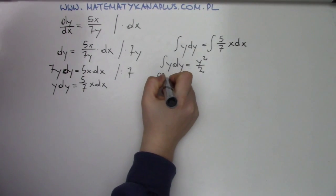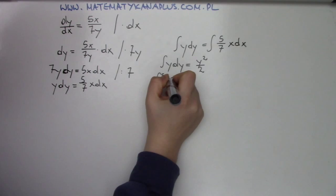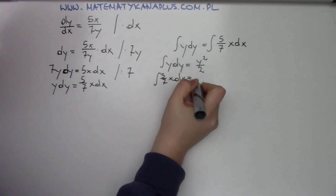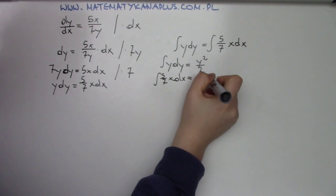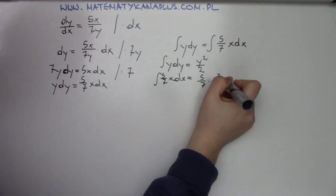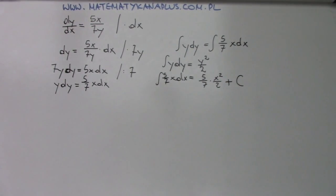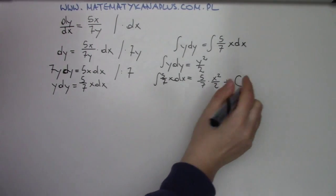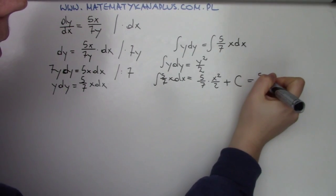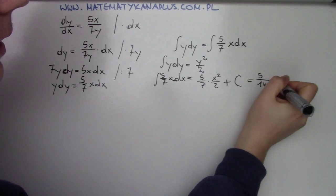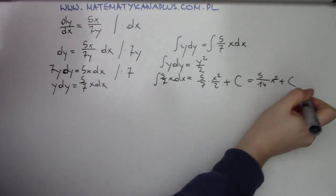And now we compute the integral from the right side. So it will be like this. And here we have plus our C or any other letter you like, and it's an arbitrary constant. We know it and we write it only here. When we compute it, it would be like this.